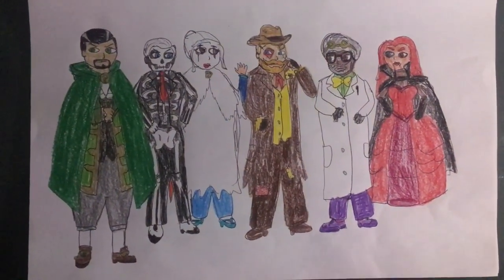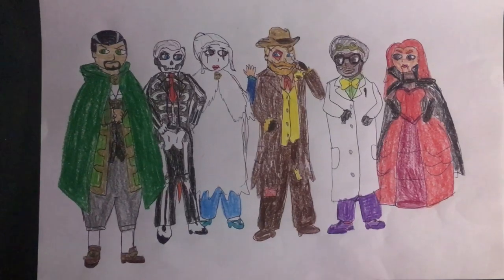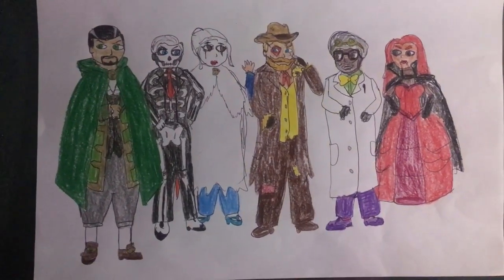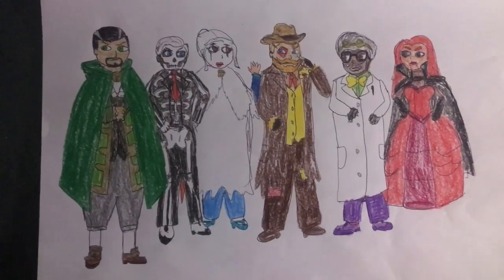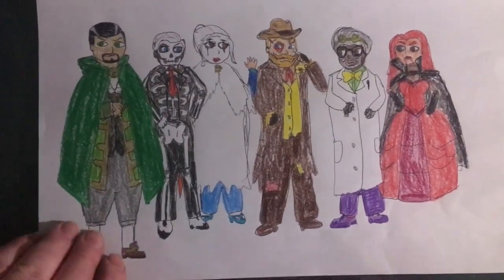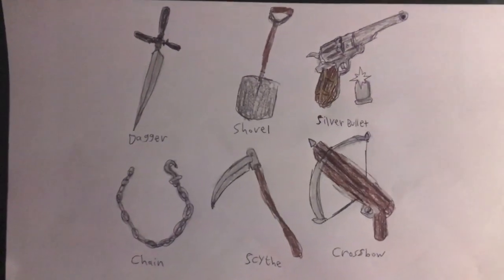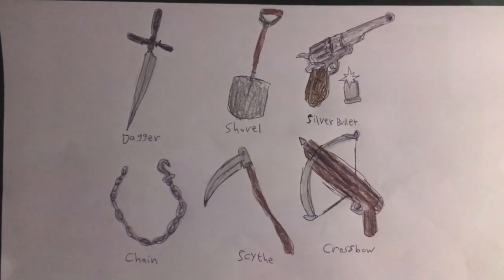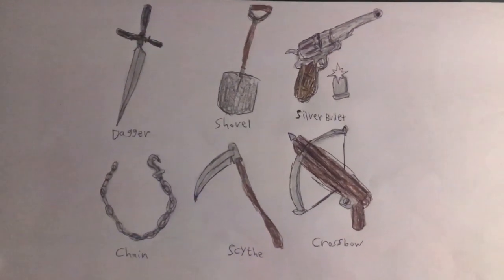Was it the Reverend Green, Chef White, Mrs Peacock, Colonel Mustard, Professor Plum, or Miss Scarlet? Did they use the dagger, the shovel, the silver bullet, the chain, the scythe, or the crossbow?